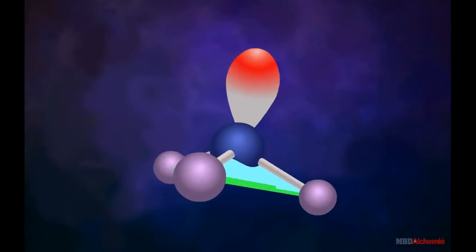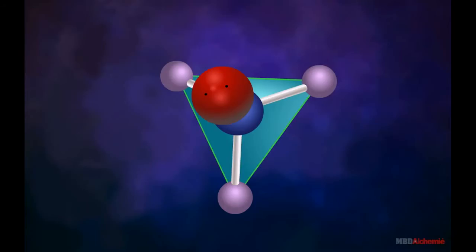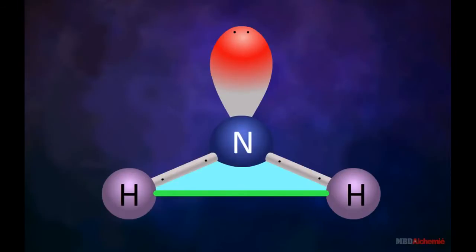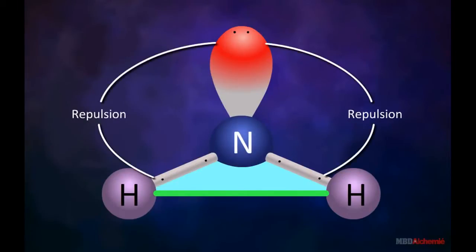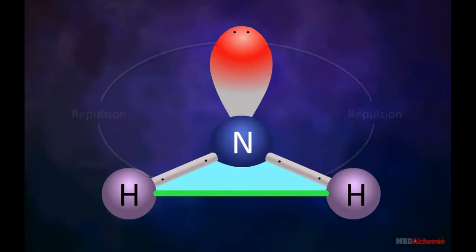The fourth sp3 hybrid orbital contains lone pair of electrons present over nitrogen atom. The electrons constituting the bond between nitrogen and hydrogen atoms are repelled by the lone pair of electrons on nitrogen atom.